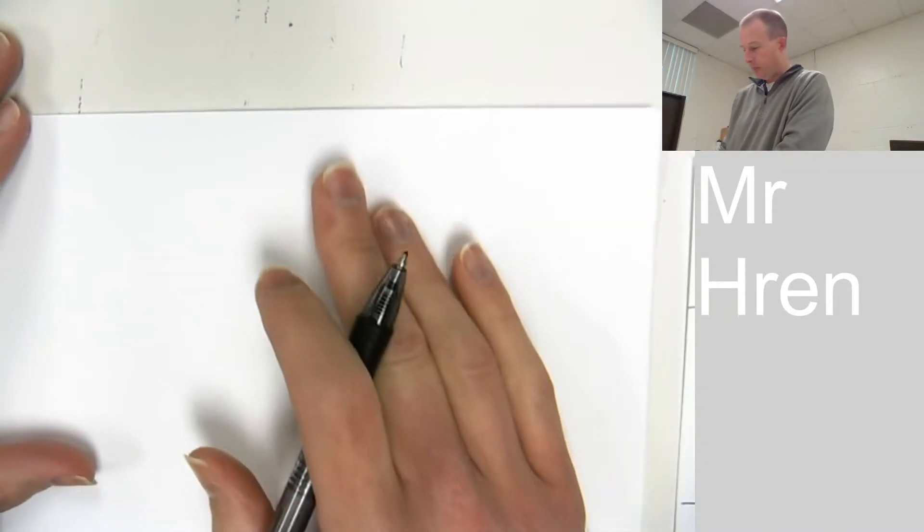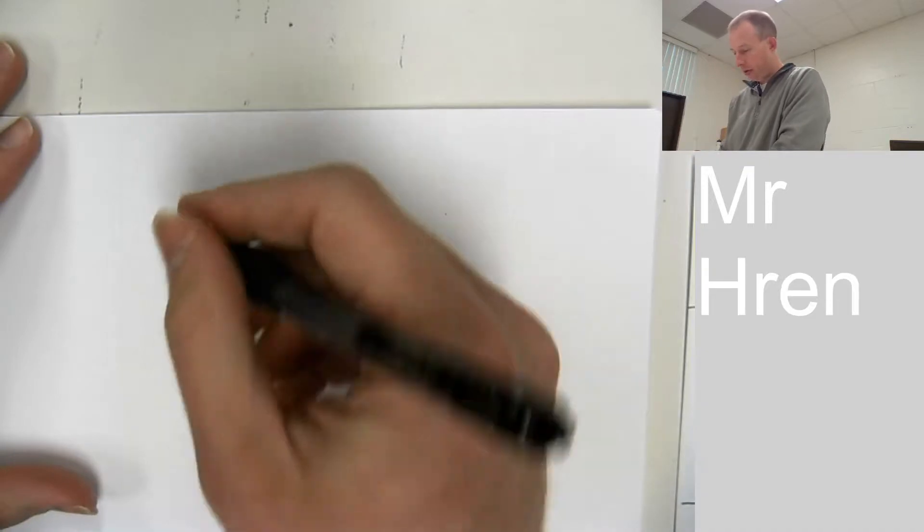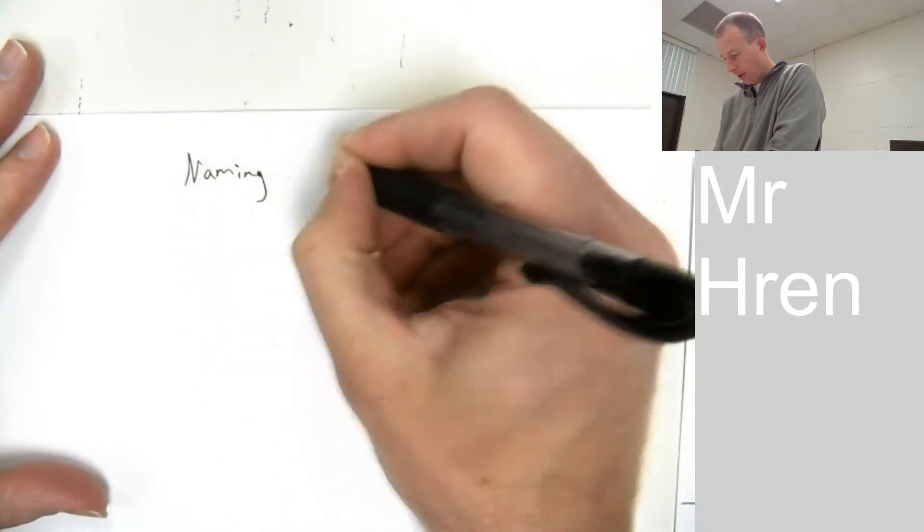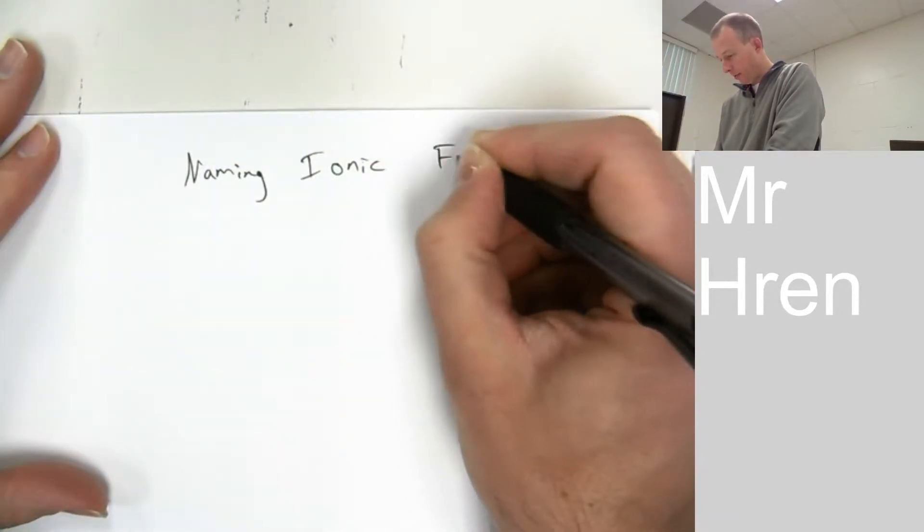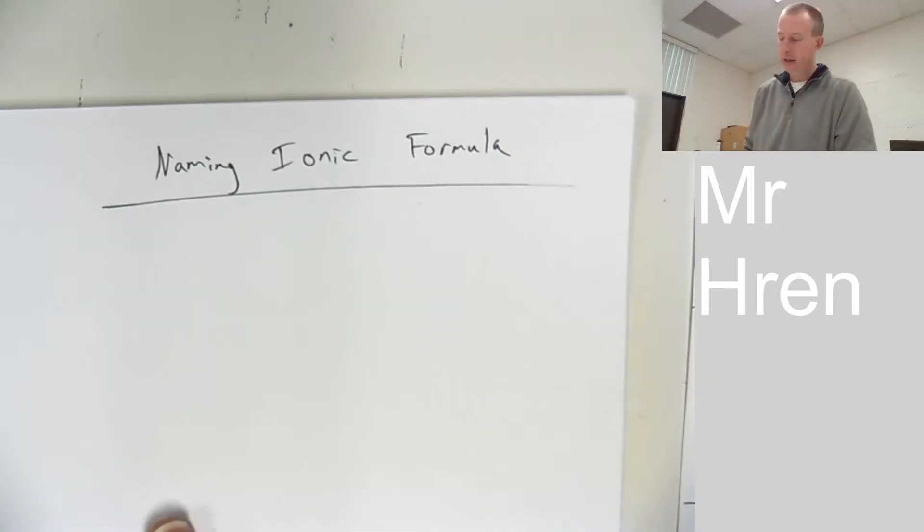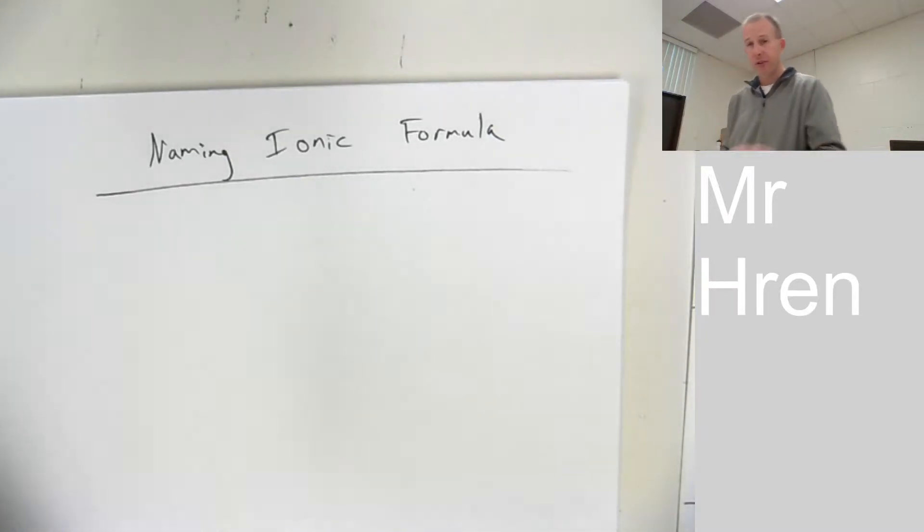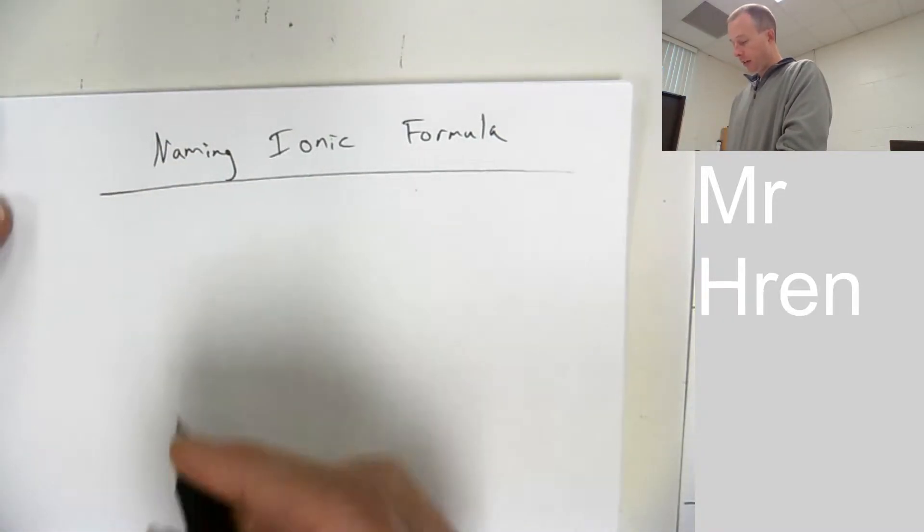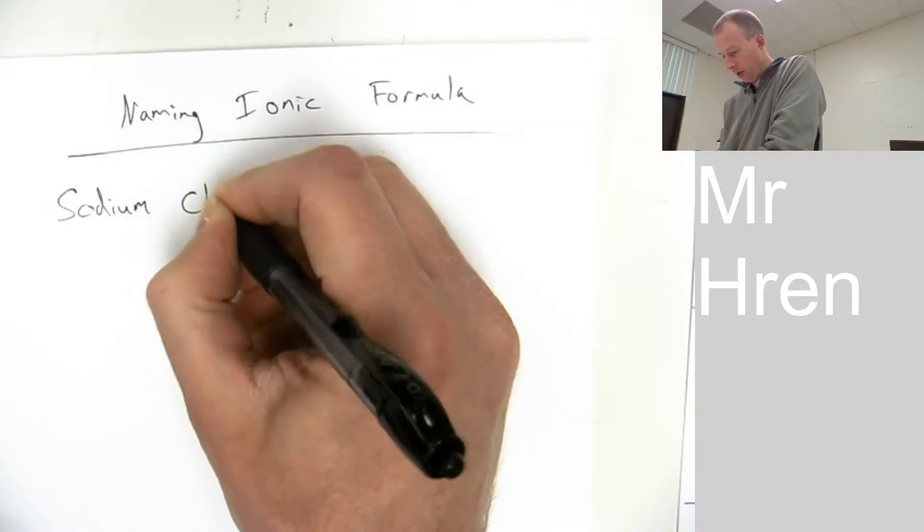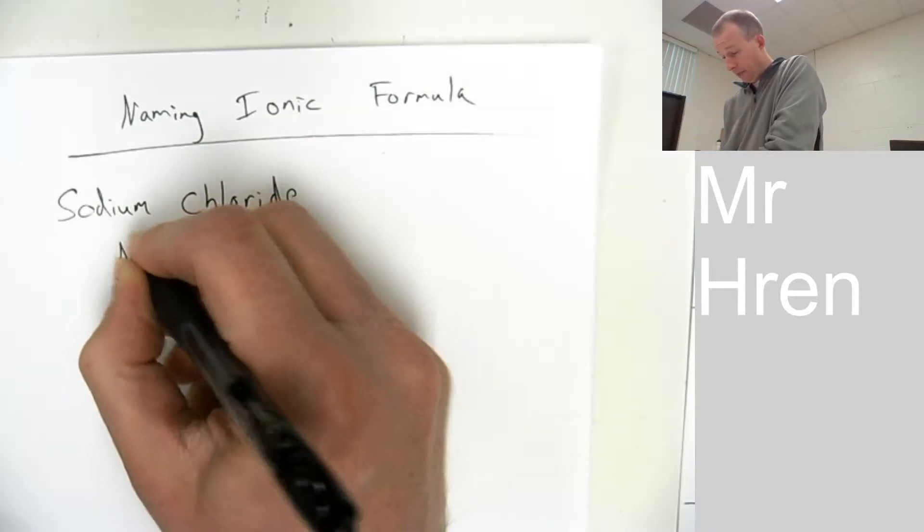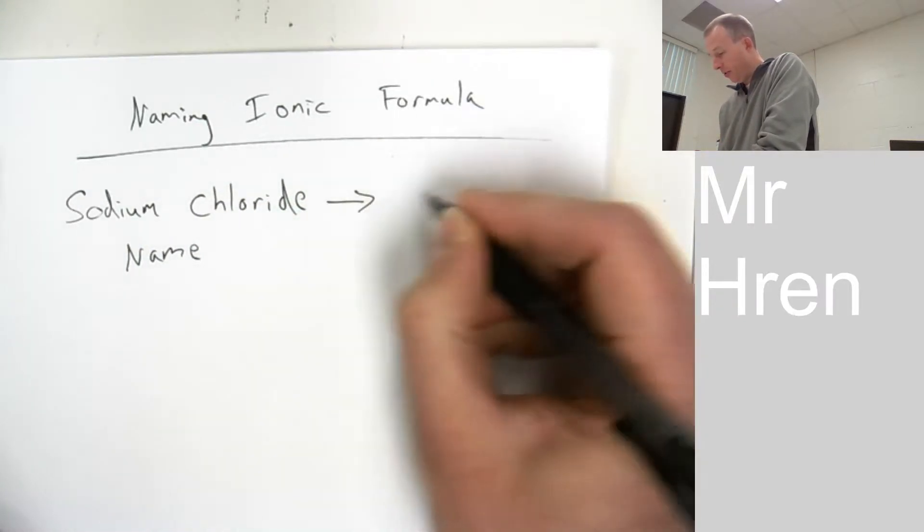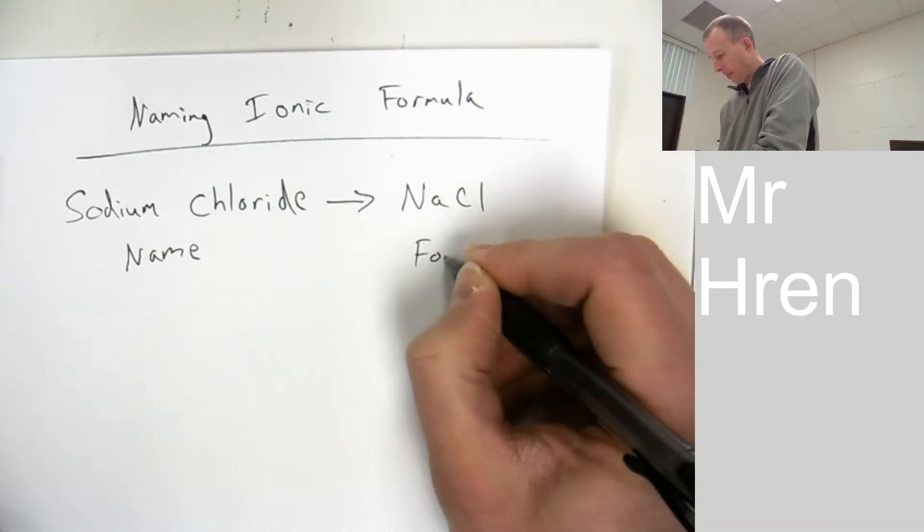The basic goal is that you are going to be naming ionic formulas. Remember, ionic is metal to non-metal bonds as a transfer of electrons. Very important that we never forget that. So far, I have given you a name of an ionic formula. This is the name, table salt, sodium chloride, and you have converted it to a formula. That's how we've done it so far.